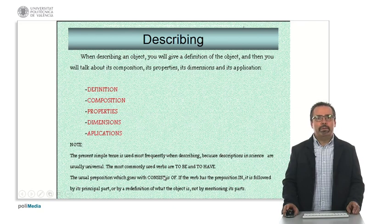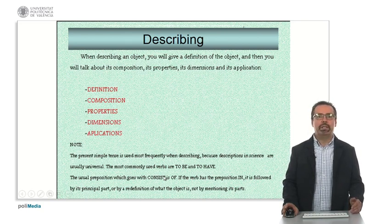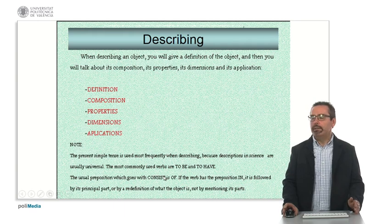We may, we can, depending on the object, focus on certain aspects. The composition, the properties, dimensions, applications, etc. When we describe something, and it's important to note that normally, the verb tense that we use is the present, the simple present. With typical verbs, such as to be and to have.